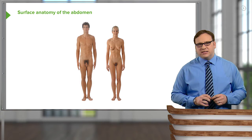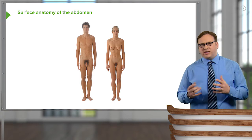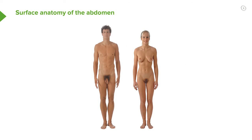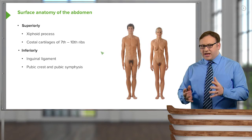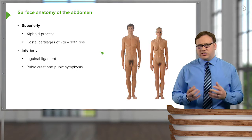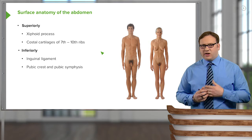So on the screen at the moment, we can see the body plan of the male and the female. We're really going to be concentrating on the abdominal region, which we can see here in the male and also in the female — this abdominal region that's positioned inferior to the thorax. On here, we can pick out a series of important landmarks, some of which we can feel on ourselves.